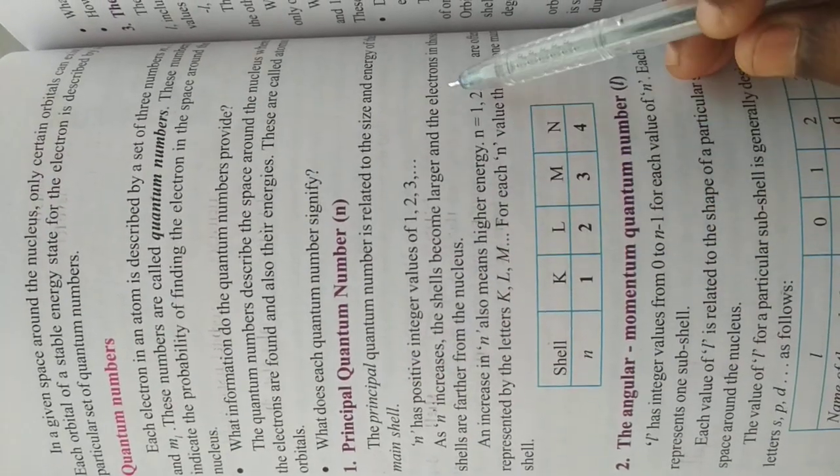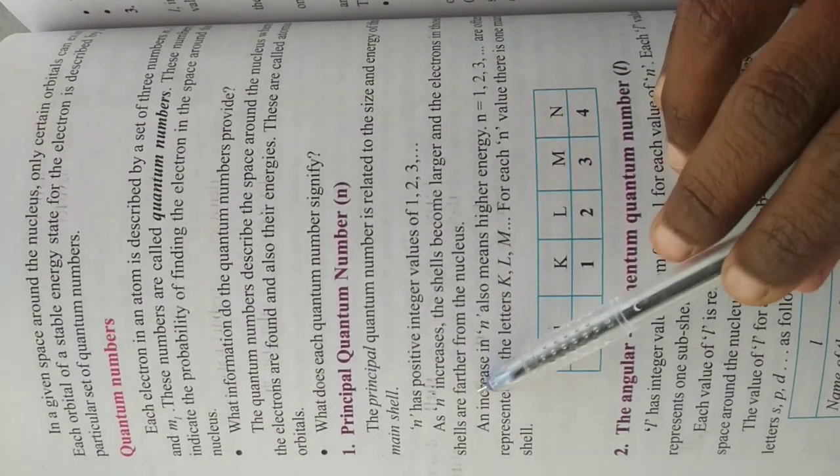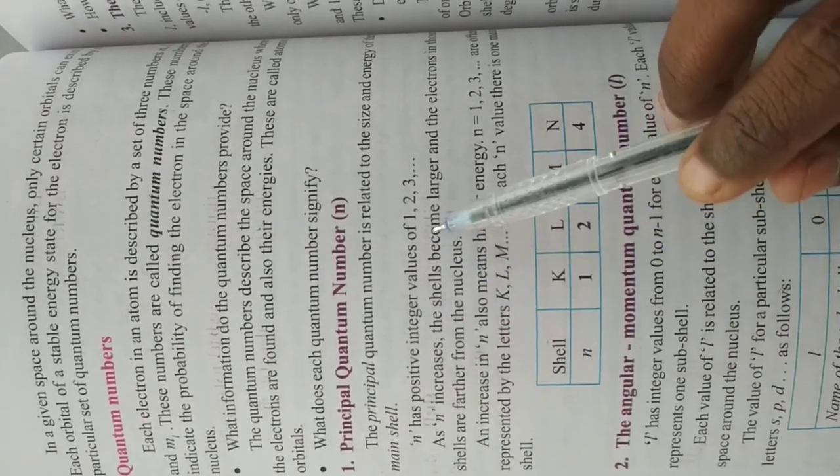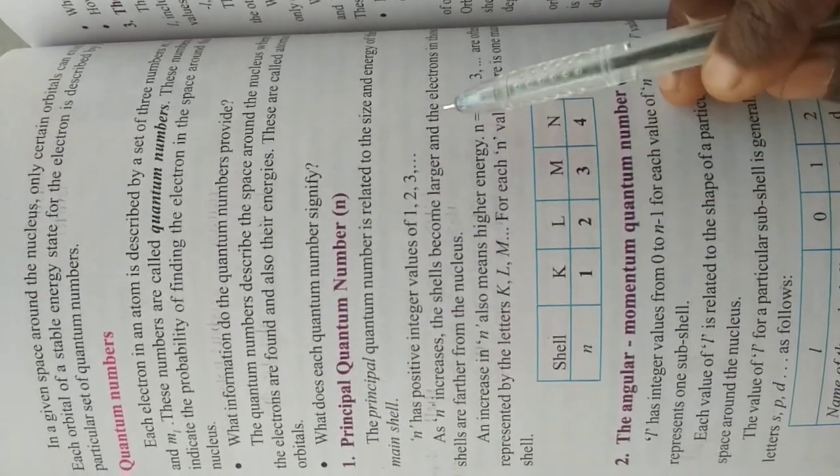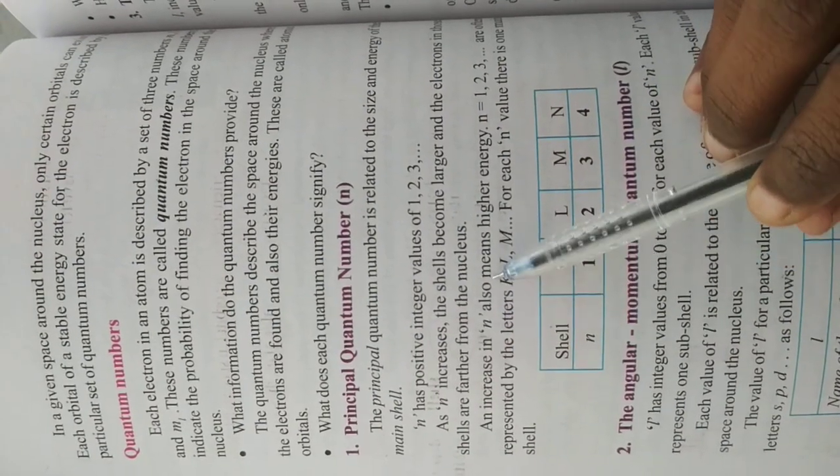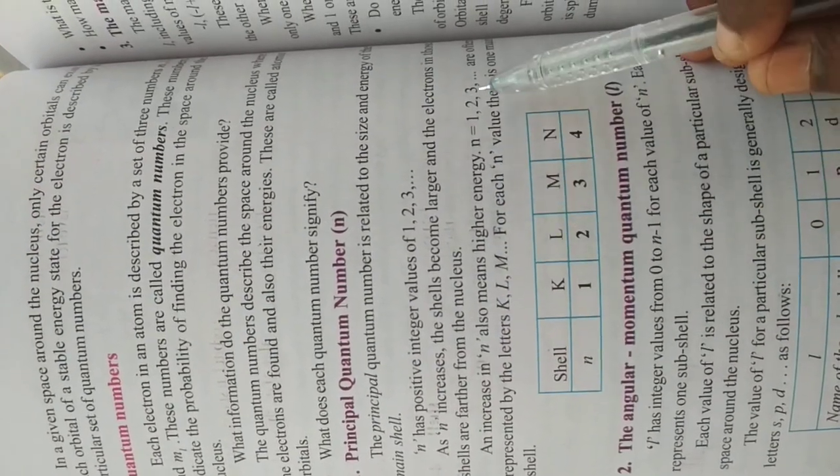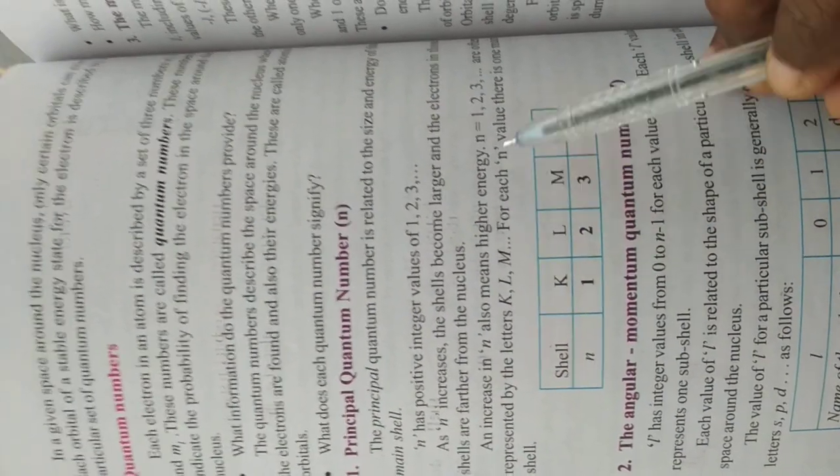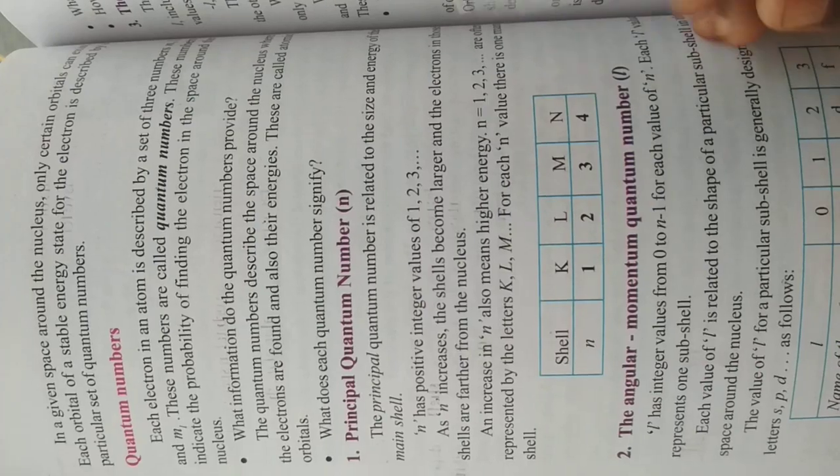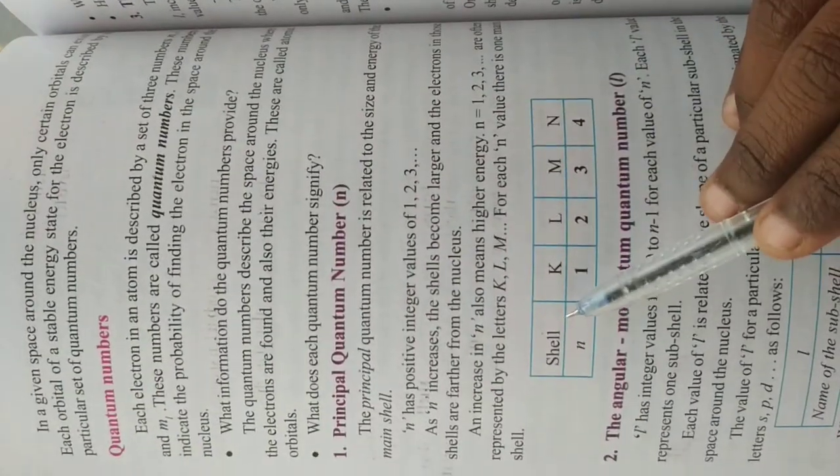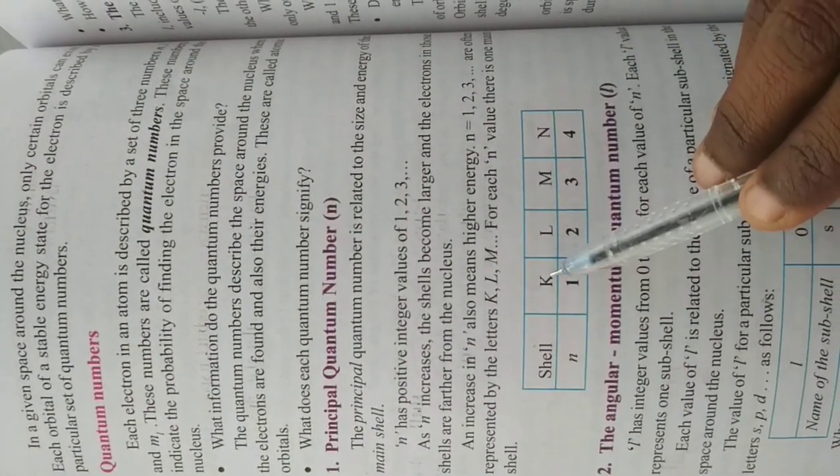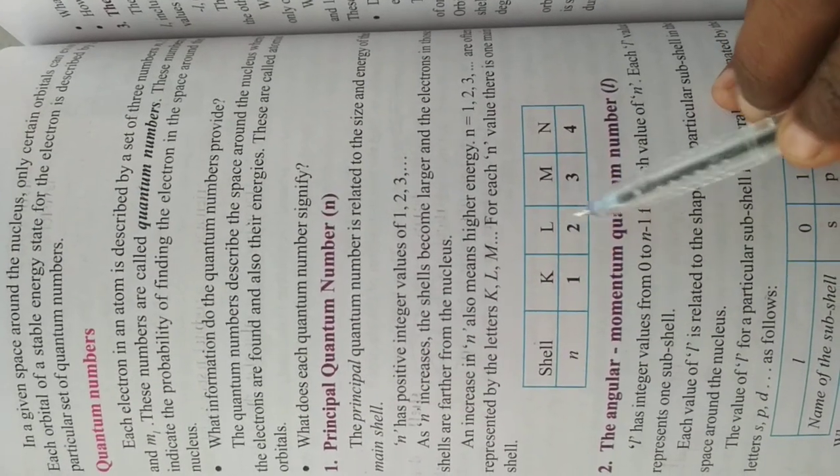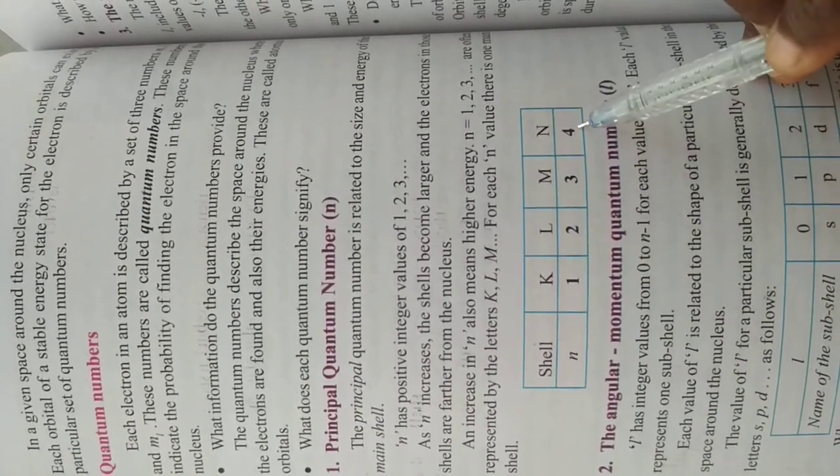As n increases, shell becomes larger around the nucleus. An increase in n also means higher energy level. n = 1, 2, 3 are often represented by the letters K, L, M. For each n, there is one main shell. Shell is nothing but K, L, M, N. n values will be K = 1, L = 2, M = 3, and N = 4.